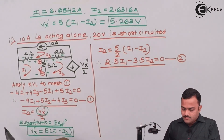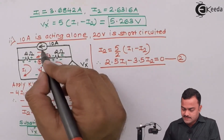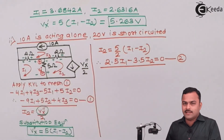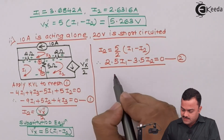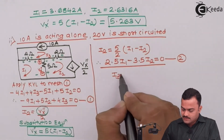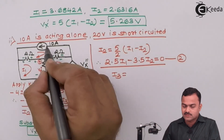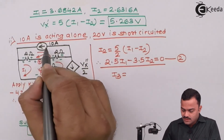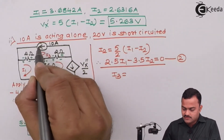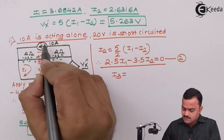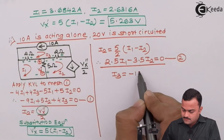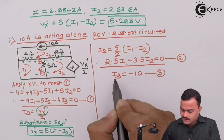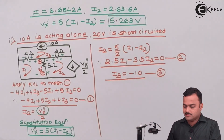For mesh 3, there is again a current source present, so no need to apply KVL. We can straight away say I3 equals the current given by the current source. Since I3 direction and the 10 ampere direction are mismatched, I3 equals minus 10 amperes as equation number 3.